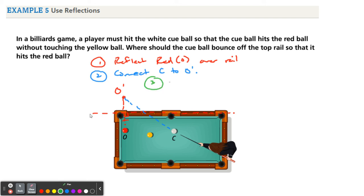And the third step is, I'm going to mark the intersection of the rail and O prime C with a point P. Mark the intersection point P. So this would be my point P.